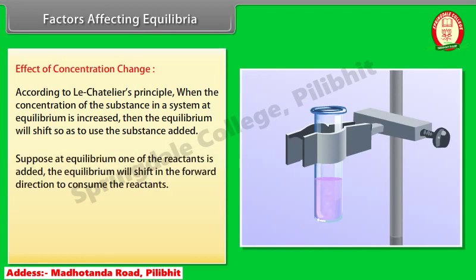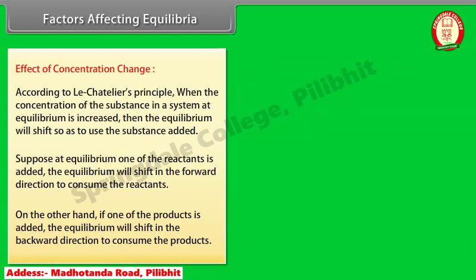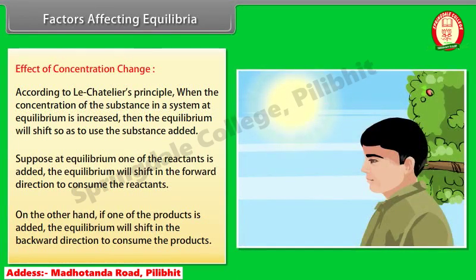If one of the reactants is added, the equilibrium will shift in the forward direction to consume the reactants. On the other hand, if one of the products is added, the equilibrium will shift in the backward direction to consume the products. For example, on a humid day we sweat more, because the surrounding air has a large amount of water vapors and our body cannot lose water as water vapors.